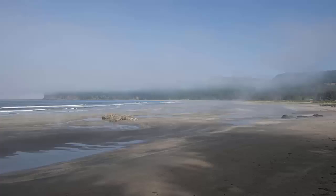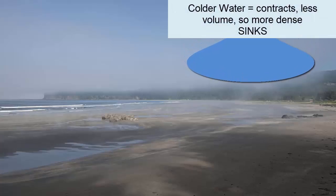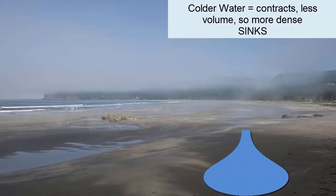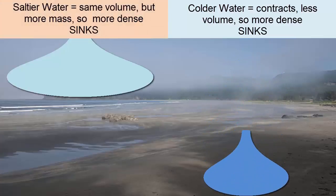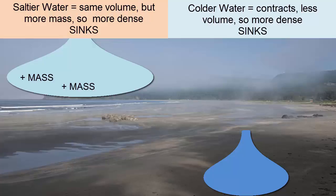Where do we see objects rising and sinking on our planet as density changes? In the oceans, when water cools, it contracts, becomes smaller in volume, and thus denser, and sinks. If water becomes saltier, it adds mass without changing its volume. It becomes denser and sinks.